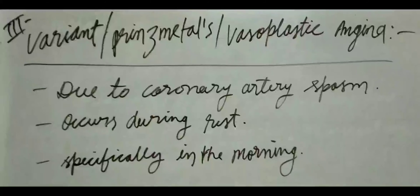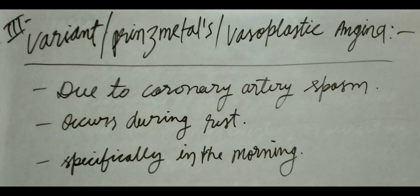You should immediately contact your healthcare provider. The third type of Angina is Variant Angina, also known as Prinzmetal Angina or Vasospastic Angina. It is mainly caused by coronary artery spasm. This Variant Angina occurs when the person is resting, and mainly occurs at a specific time of the day, mostly in the mornings.